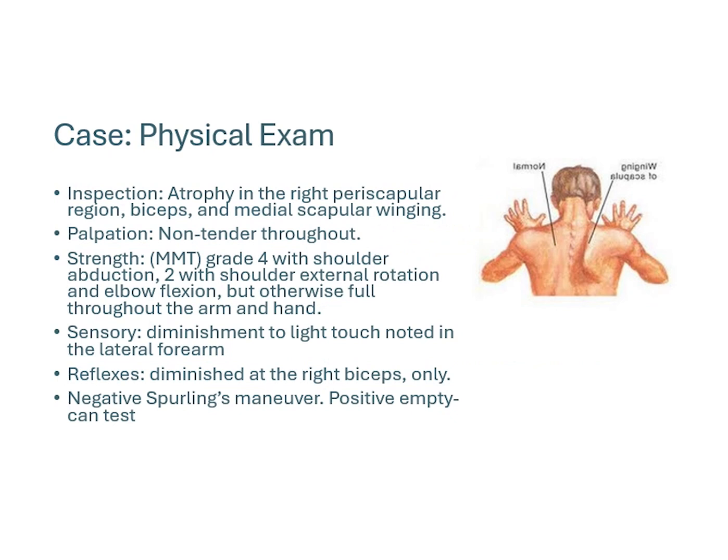On examination, we were able to appreciate significant atrophy throughout various regions in the upper shoulder, especially the biceps on the right as compared to the left. We did note some medial scapular winging when we had the patient elevate and protract the shoulders. He had no palpation tenderness throughout.